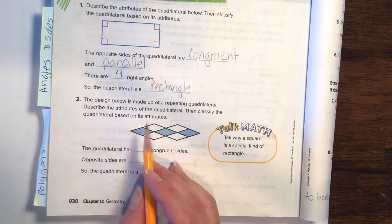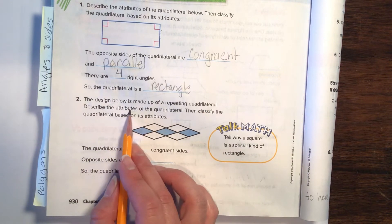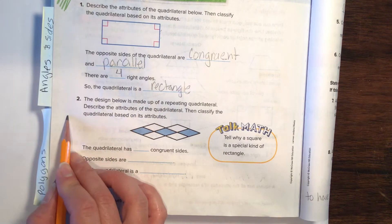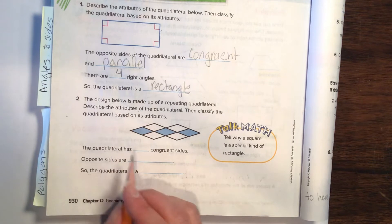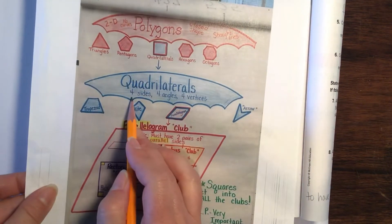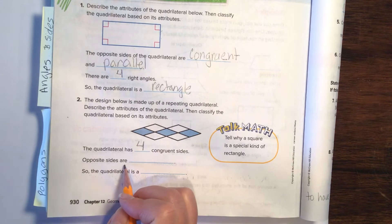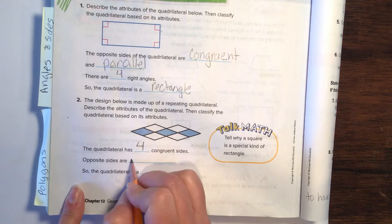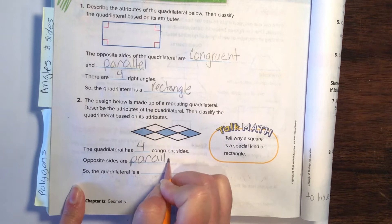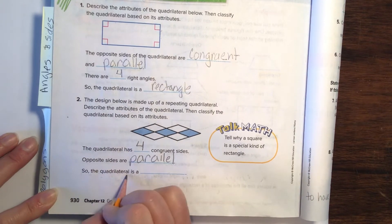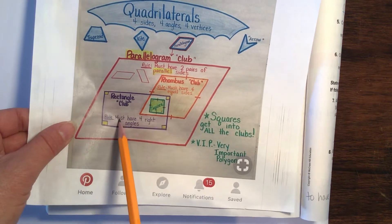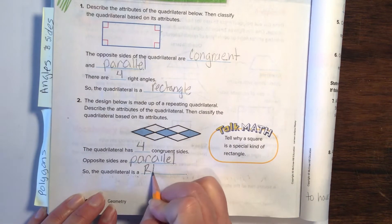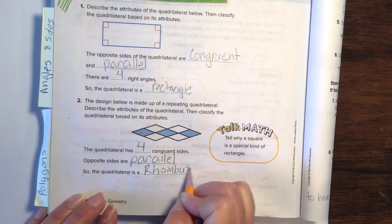Let's do number two. The design below is made up of a repeating quadrilateral. Describe the attributes of the quadrilateral. We are looking for sides, angles, and parallel. How many congruent sides does it have? A quadrilateral has four sides. The opposite sides need to be like train tracks — they are parallel. So this quadrilateral is a rhombus.